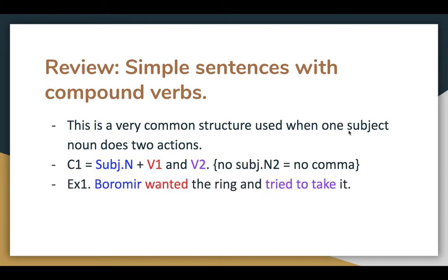Example 1: Boromir wanted the ring and tried to take it. It follows the structure exactly, with an object after each of the two verbs. Because there's only one subject, we don't need a comma in the middle. We could rewrite it as a compound sentence: 'Boromir wanted the ring, and he tried to take it.' In that case you would need a comma. Both sentences carry the same information — it's a style choice. Remember: if you include the pronoun 'he' in the second clause, you need the comma. If you remove the pronoun, you remove the comma as well.